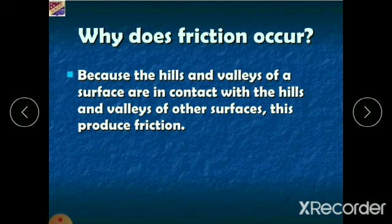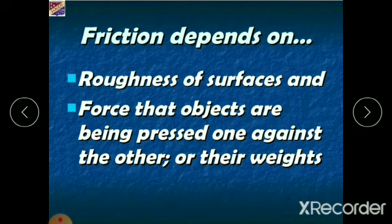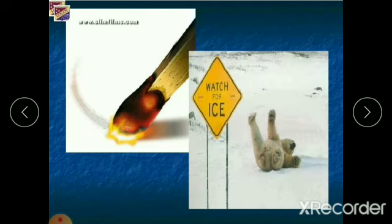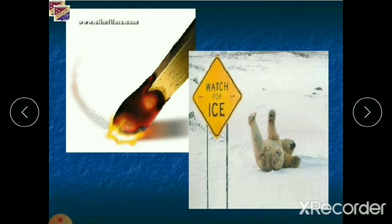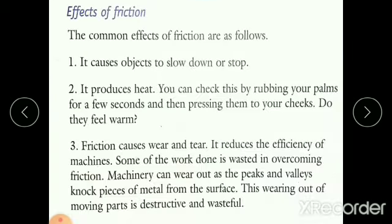Friction depends on the roughness of the surface — if the surface is rough, the friction will be more. It also depends on the force with which objects are pressed against each other, such as their weights. For example, when you scratch a matchbox, the surface is rough and that is why you get fire from the match stick. If the surface were smooth, you would not get fire so easily — this is because of friction.